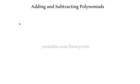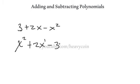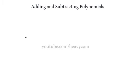Let's look at writing a polynomial in standard form. If we had 3 plus 2x minus x squared and wanted to write it in standard form, we'd write it as negative x squared plus 2x plus 3 — wait, actually x squared plus 2x minus 3. In standard form you look at the leading term with the largest exponent and write the terms in descending order.